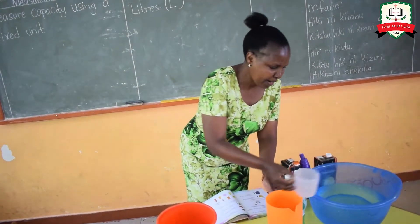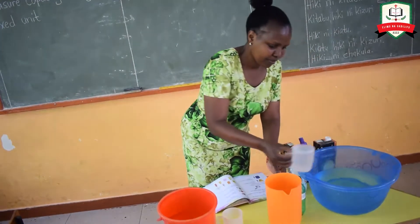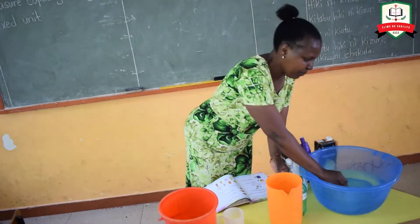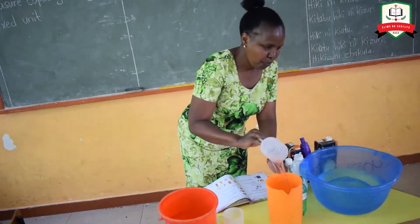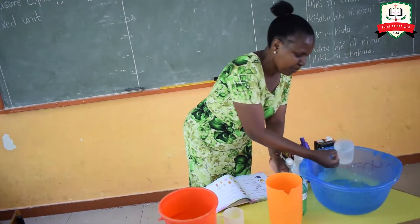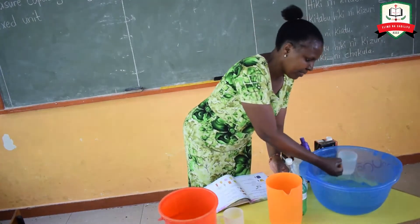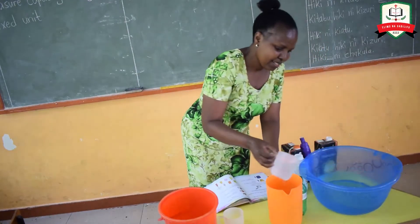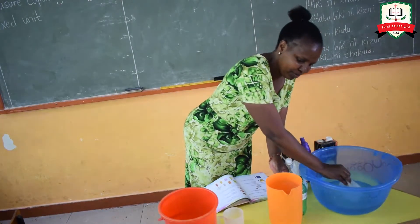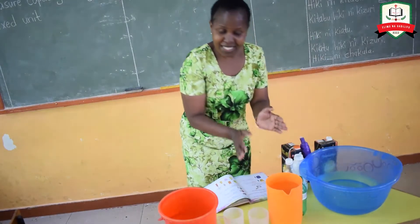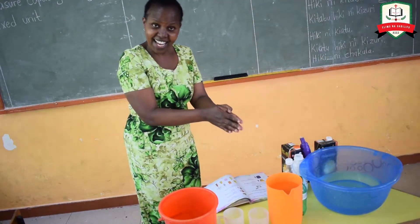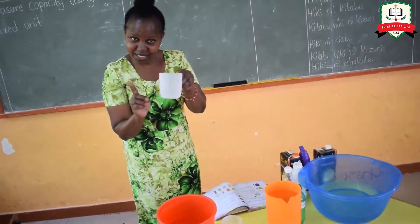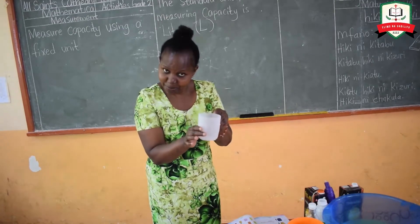One, two, three, four, five, six, seven. Wow, it's full! So the capacity of my jug is seven cups. It is filled by seven cups.